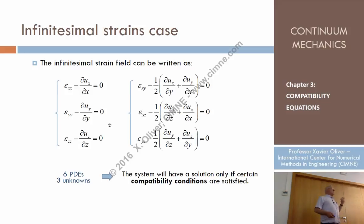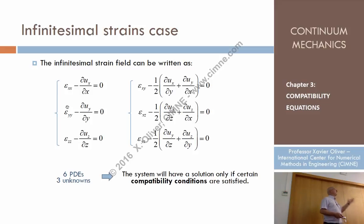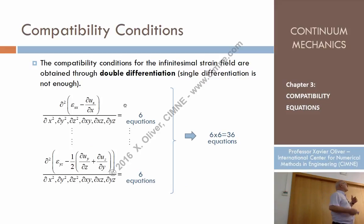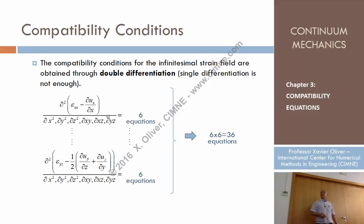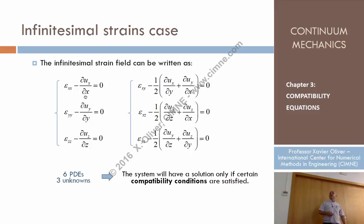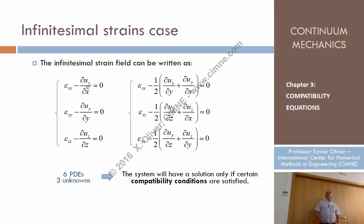My goal is now to obtain what conditions these invented strain fields must fulfill in order to be compatible — so that they produce a valid displacement field. The process is the same as in the previous example introduced to present the mechanism. Now it is a little more mathematically heavy, but the concept is the same. I take these six equations and take the first derivative of every one of them with respect to the three coordinates, obtaining a system with first and second derivatives.